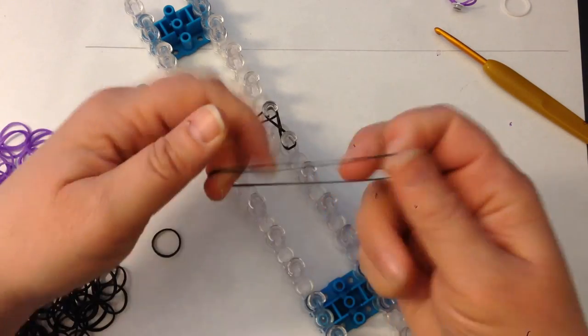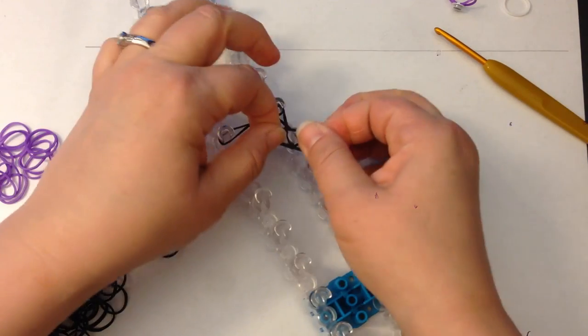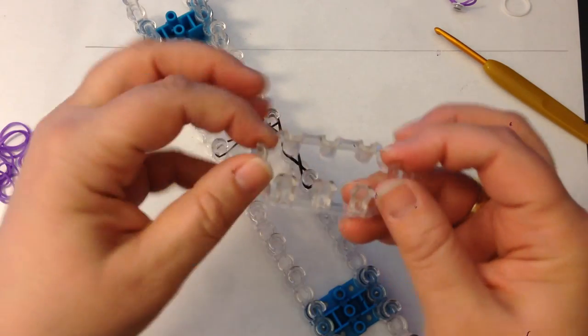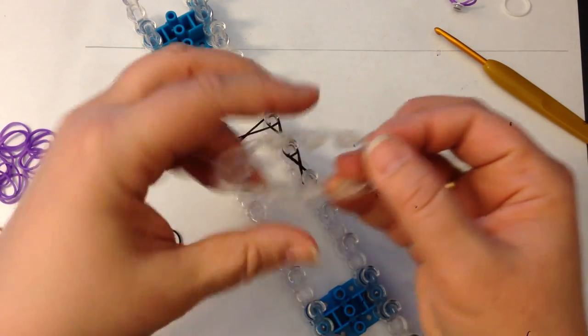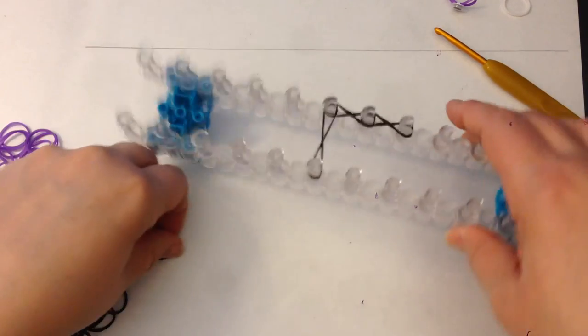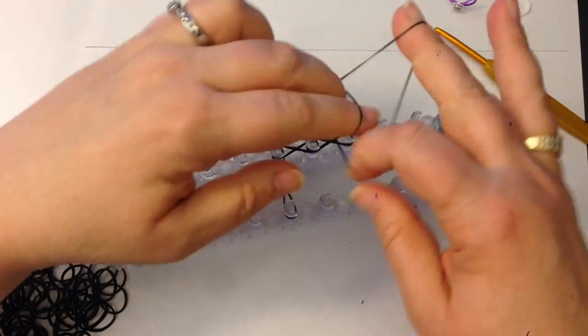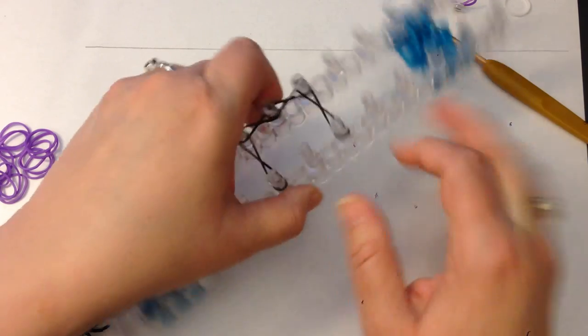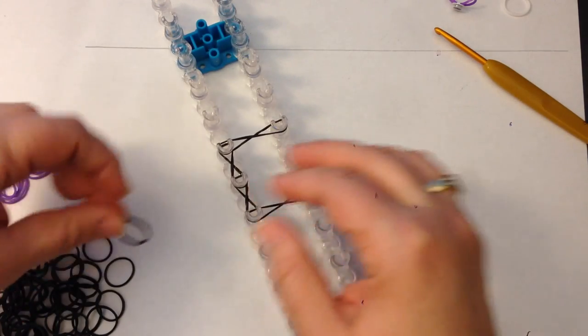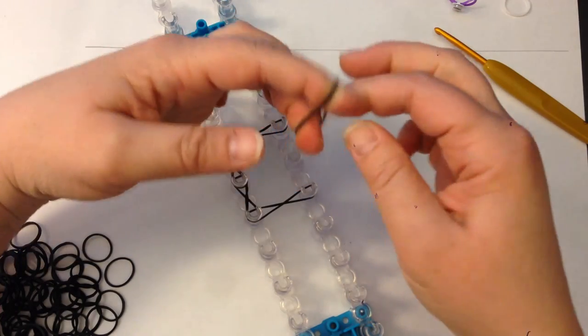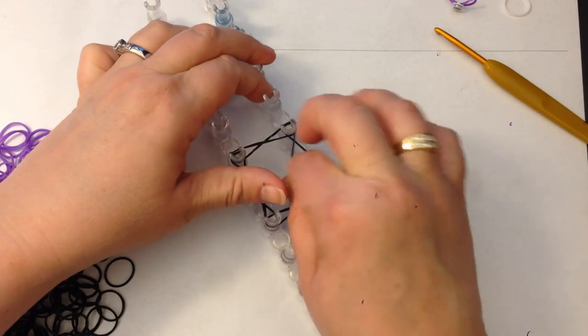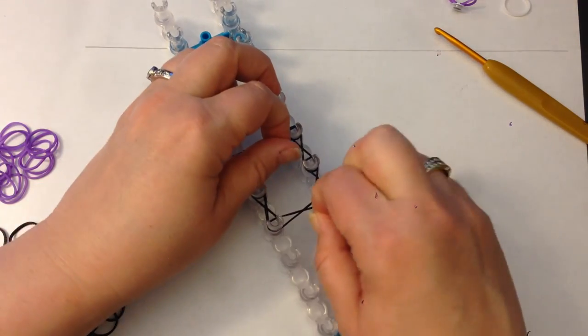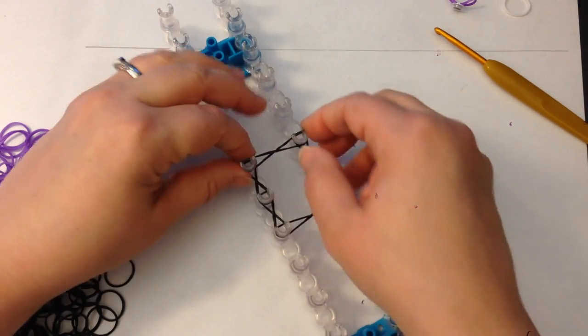We're only using six pegs so if you're using your monster tail which has eight pegs all you're going to do is not use these two end pegs. Turn your loom around and this is the only row that you're going to do this with. It makes the bottom a bit tighter and stops it from sliding off your pencil.